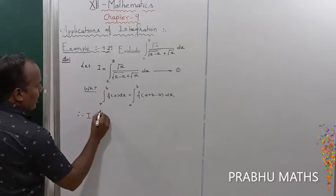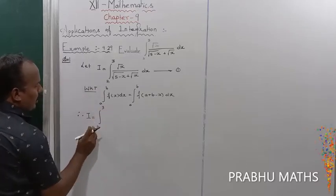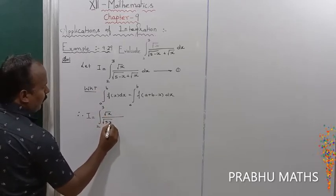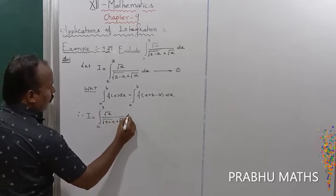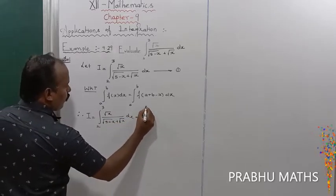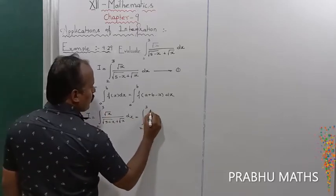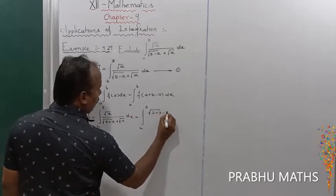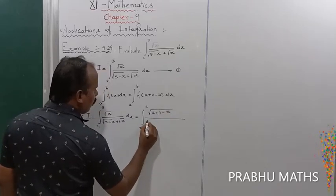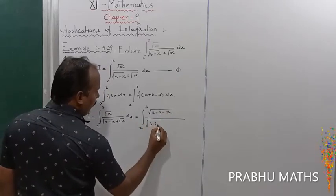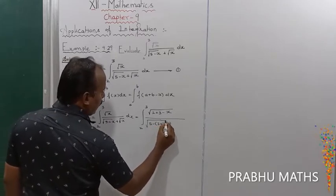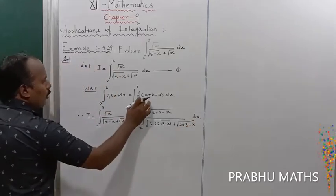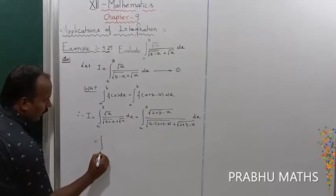Therefore, I is equal to integral from 2 to 3, where a to b, applying the property: root x replaced by root of (2 + 3 - x) divided by root of (5 minus (2 + 3 - x)) plus root of (2 + 3 - x), into dx.